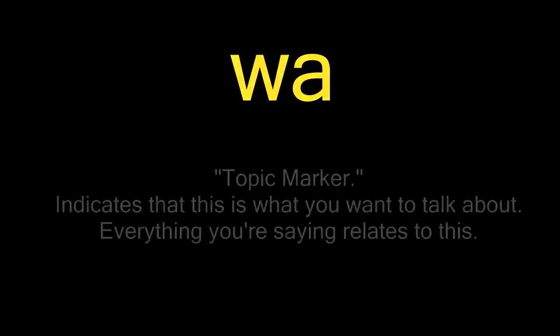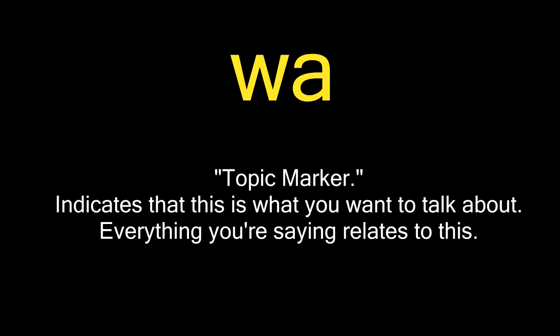The first one we'll look at is WA. WA is often referred to as the topic marker, and it means that everything you are about to say refers back to this. This is the very first particle that everybody learns when they get into Japanese. It's important because this is how you mark what it is you want to talk about. Some of you might still be confused about this whole particle thing, so let's put it into practice.